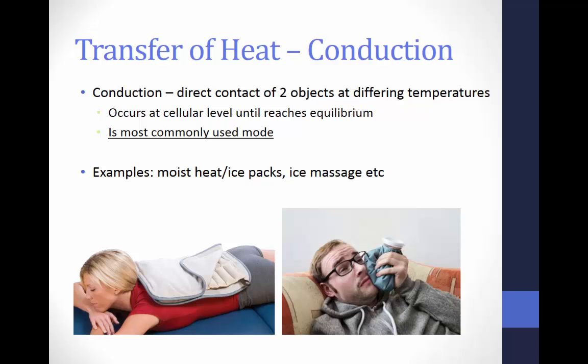Examples of conduction include moist hot packs, ice packs, and ice massage, among other modalities. Some materials are better conductors of heat than others. For example, a wooden and a metal picnic table that have been in direct sunlight — if you touch each tabletop, the metal one would feel hotter more rapidly than the wooden top, even though both objects are at equal temperatures. The greater ability of metal to conduct heat warms your hand more rapidly. In Table 5-1 on page 109 in the Starkey text, skin has a thermal conductivity of 0.96 watts per meter, while adipose tissue has a thermal conductivity of 0.19 watts per meter.